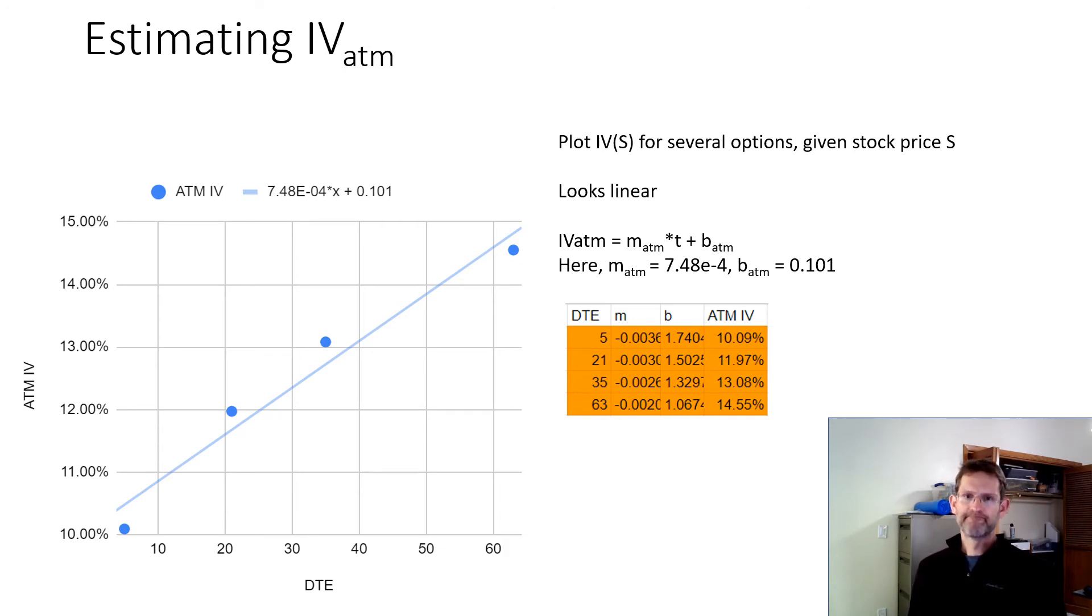So in this case, the slope and intercept of this best fit line are 7.48 times 10 to the -4 and 0.101 respectively.